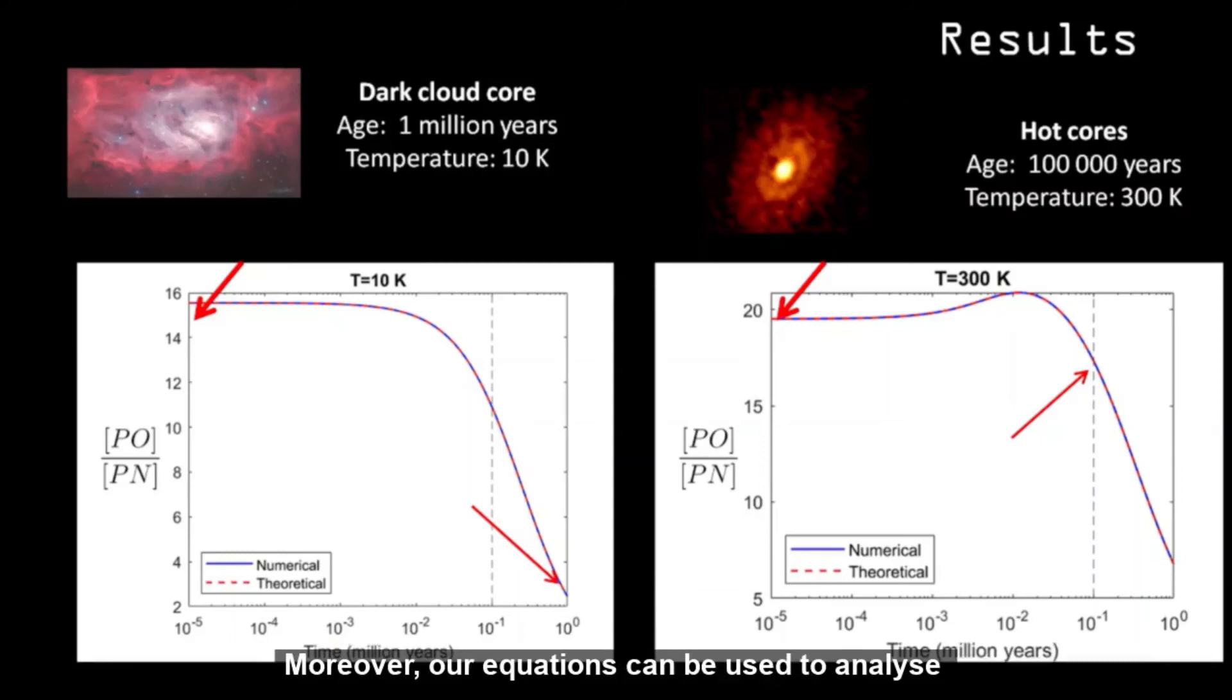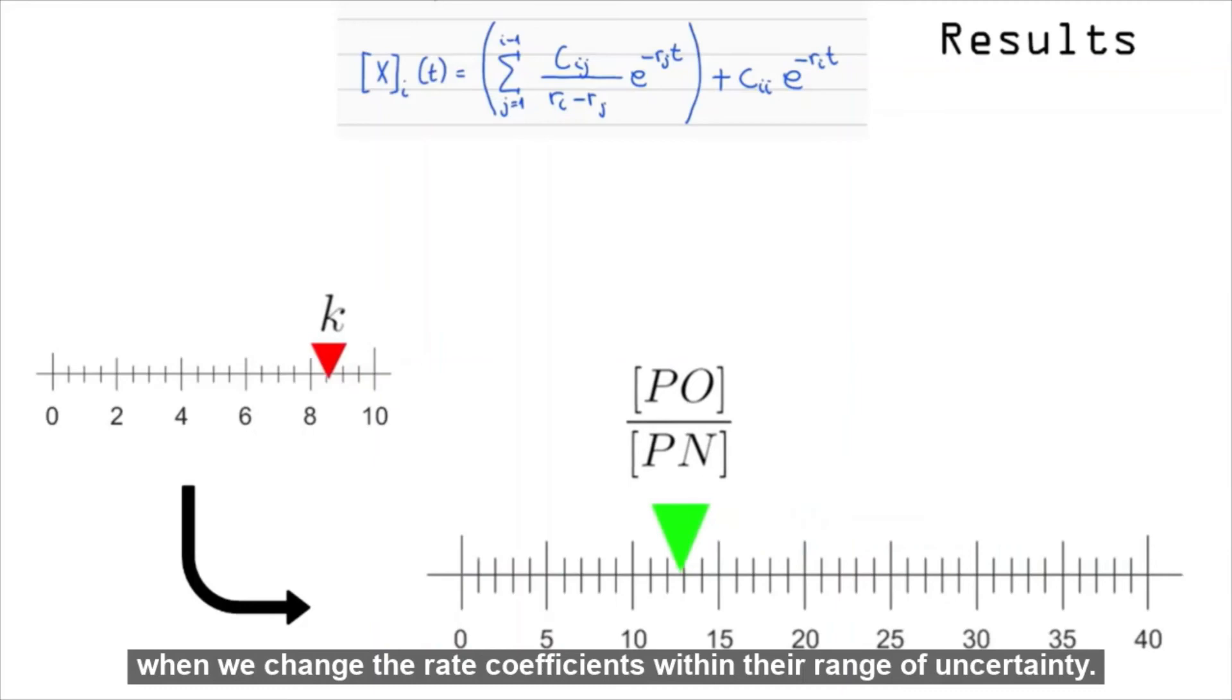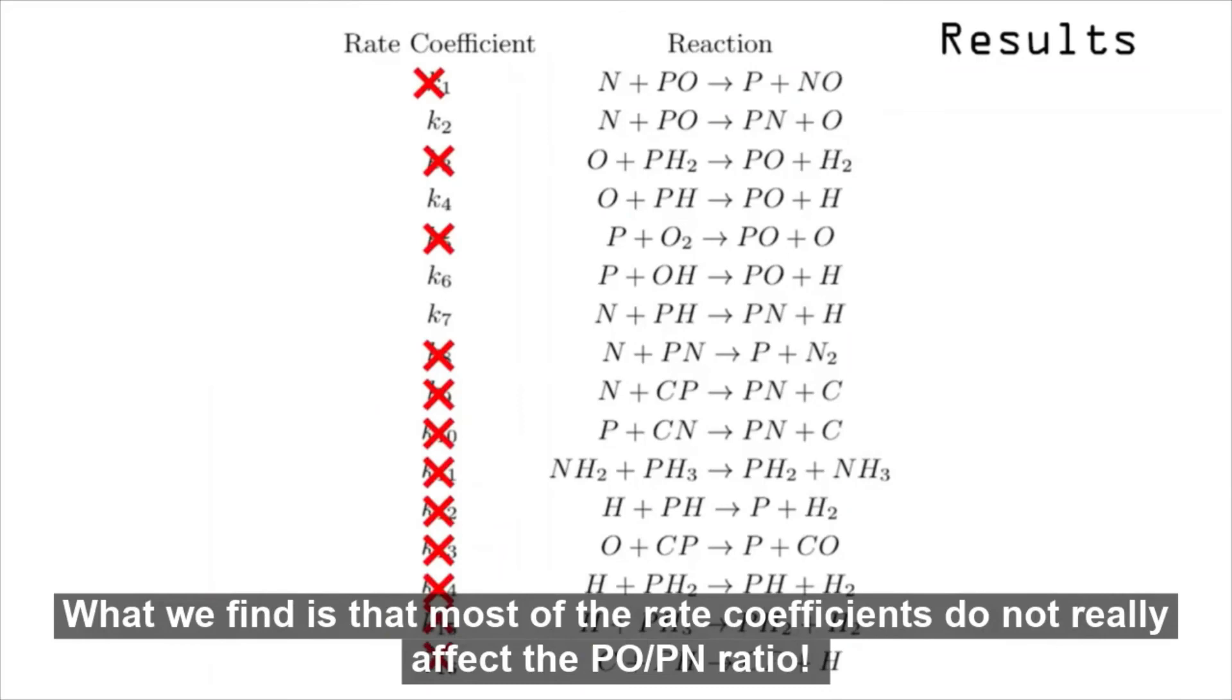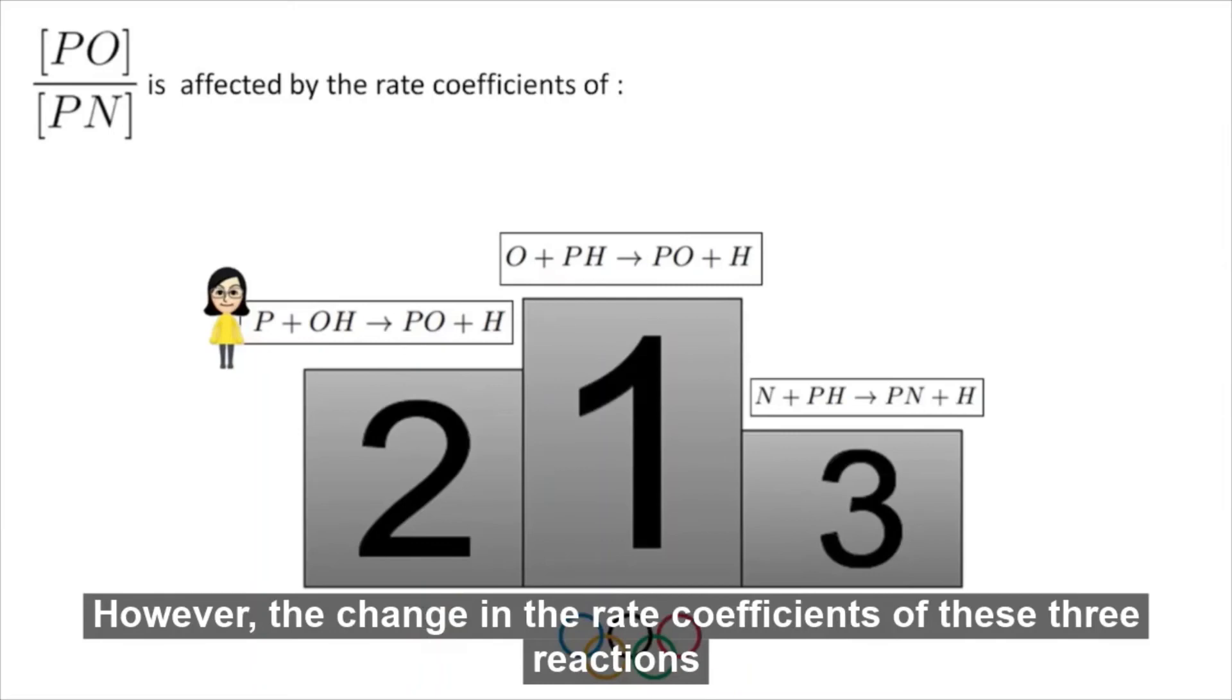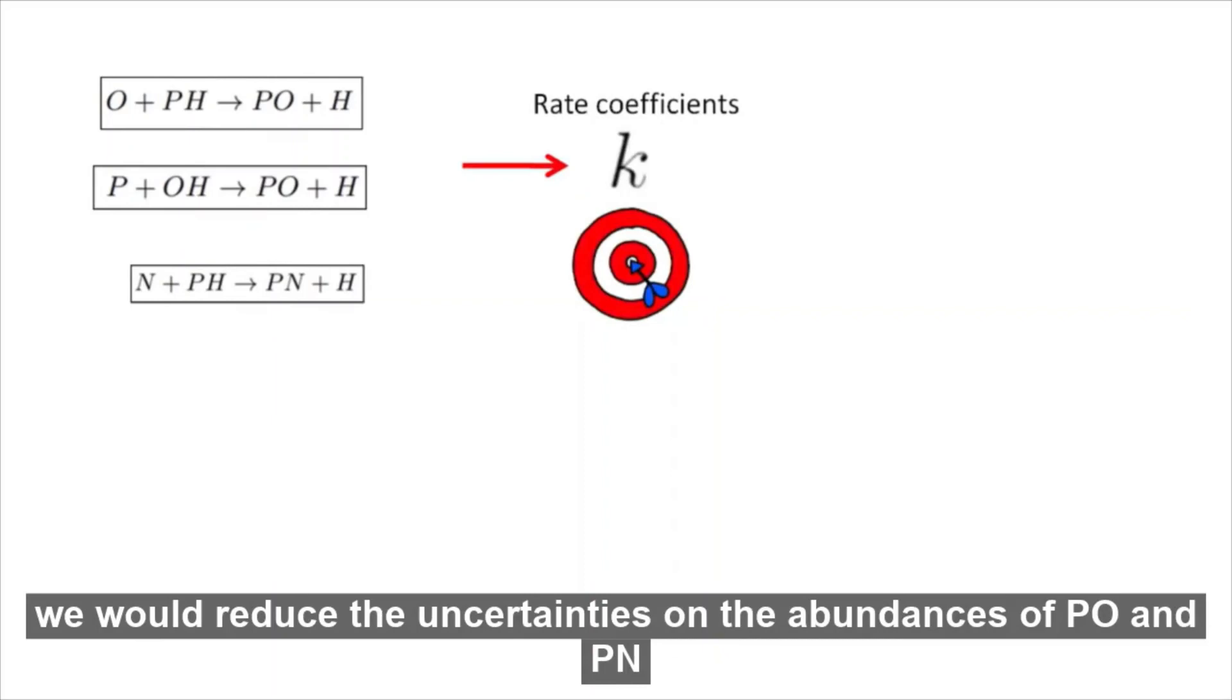Moreover, our equations can be used to analyze how the value of PO-PN ratio changes when we change the rate coefficients within their range of uncertainty. What we find is that most of the rate coefficients do not really affect the PO-PN ratio. However, the change in the rate coefficients of these three reactions has a big impact on the PO-PN ratio. This means that, if we knew with more precision the rate coefficients of these three reactions, we would reduce the uncertainties of the abundances of PO and PN, and astrochemical models would show better results.